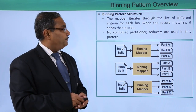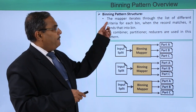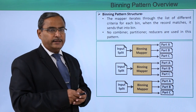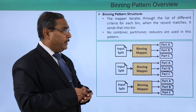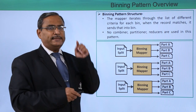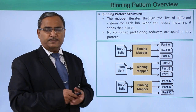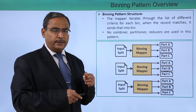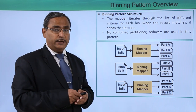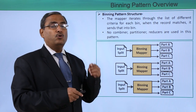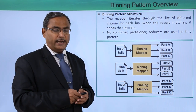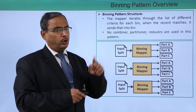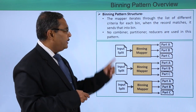Now, binning pattern structure. The mapper iterates through the list of different criteria for each bin, and when the record matches a criterion, it will be sent to the respective bin. It will go on iterating through those criteria and then, depending upon the match, the record will be sent to the respective bin.